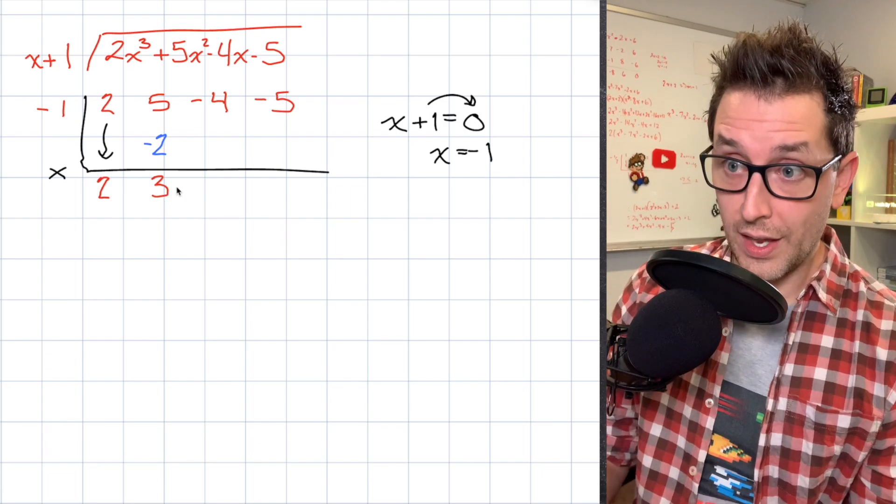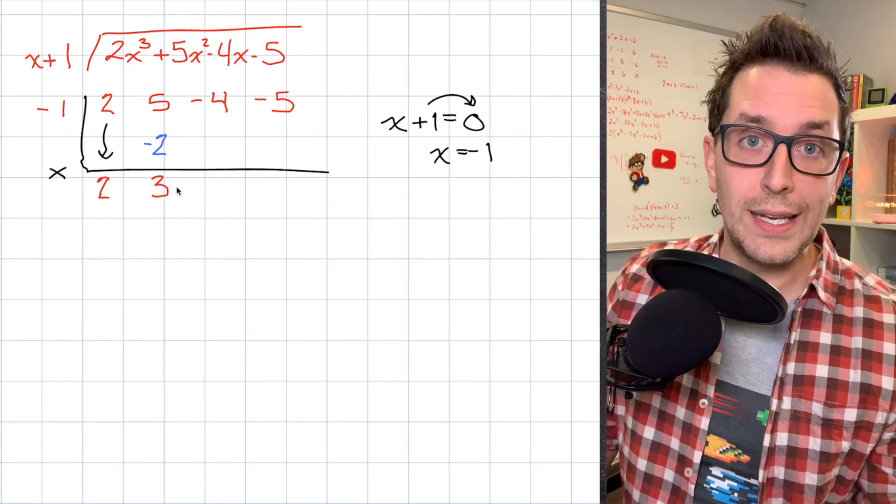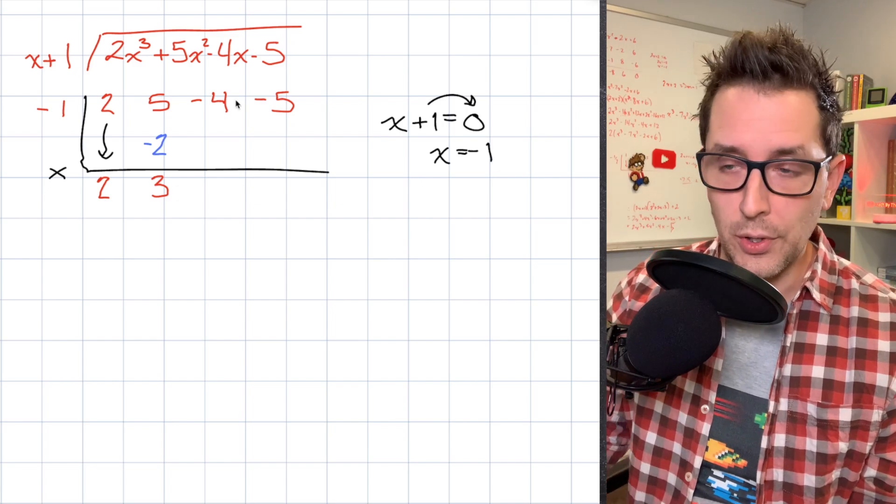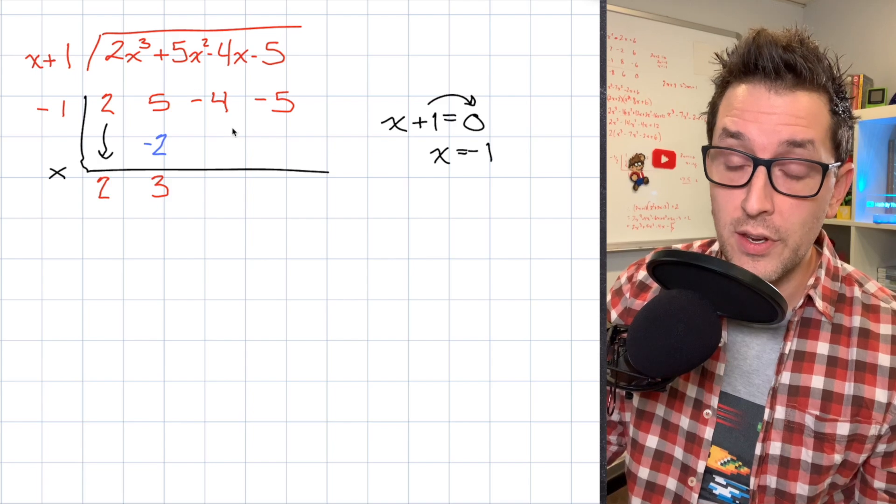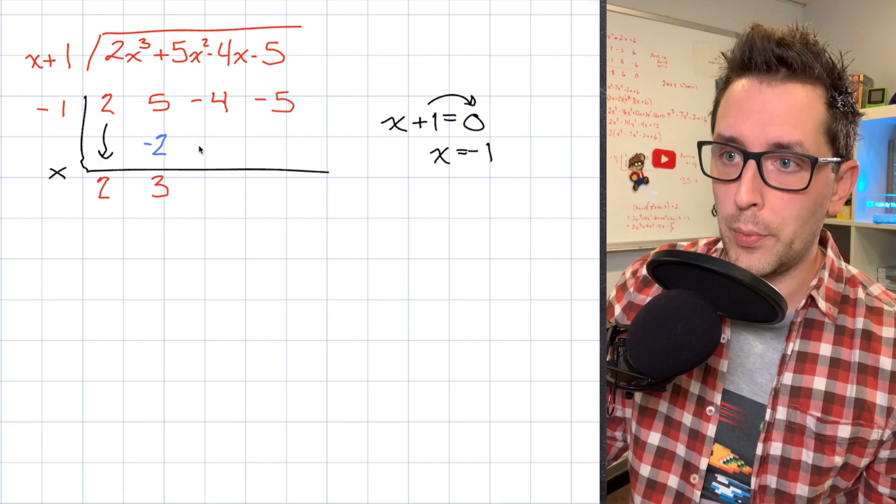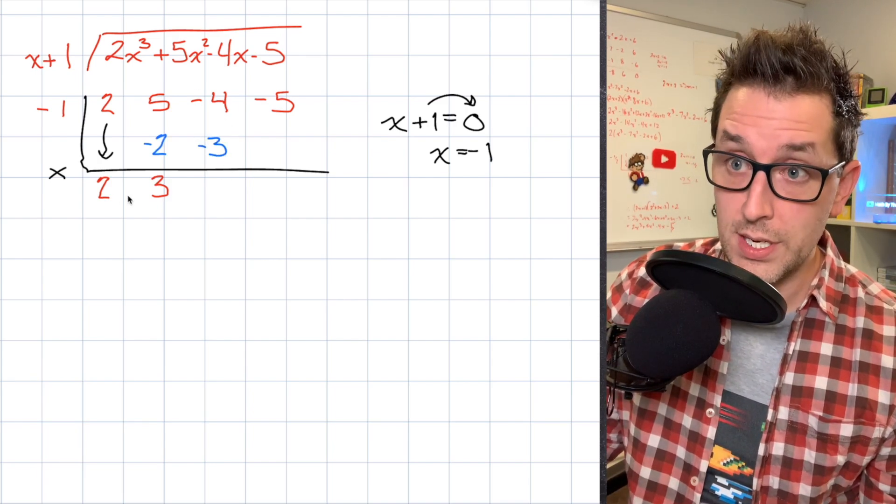Now that's really the whole synthetic division process. The rest is just going to be repeating it until we get to the end of our table. So I'm going to take that 3. I'm going to multiply by negative 1. I'm going to place the result underneath the next coefficient in my table. So I'm going to put a negative 3 here because 3 times negative 1 is negative 3.